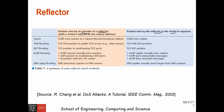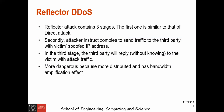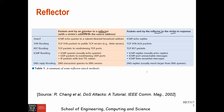The last type is DNS reply flooding, which involves sending DNS queries to a DNS server. The DNS server will reply with these queries to the victim. The impact is high because the size of the response data is quite large, amplifying the bandwidth.